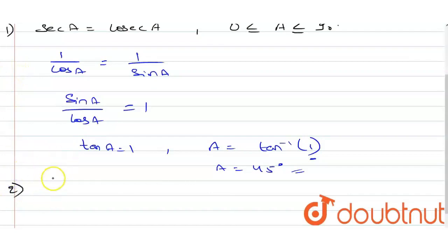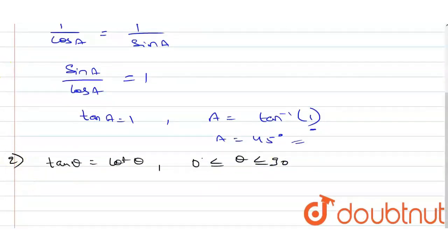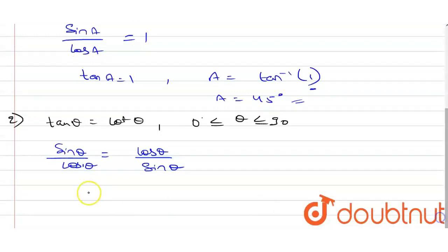Our second question is tan theta equals cot theta when theta lies in the range of 0 to 90 degrees. We can write tan theta as sin theta upon cos theta and cot theta as cos theta upon sin theta. This is our basic trigonometry.